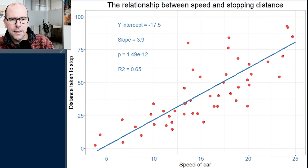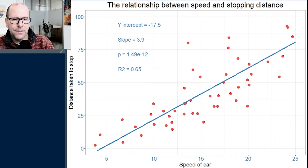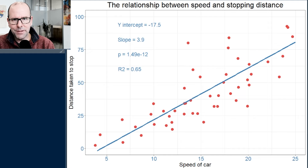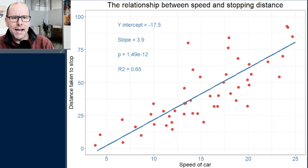The second thing we can ask is how much of the variation in the distance taken to stop — all this up and down we're seeing — can be explained by the change in the speed of the car. There may be other explanatory variables we don't have access to: the reaction speed of drivers, the kind of surface the car is on, all sorts of possibilities. But how much of this variation does the model tell us can be explained by a change in speed?